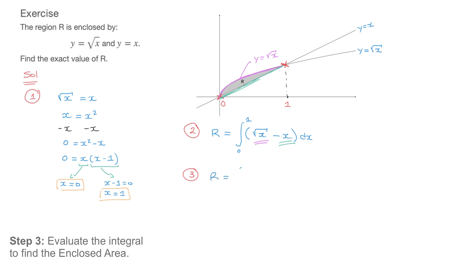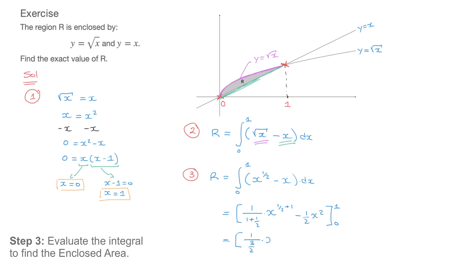R equals the integral from 0 to 1 of x^(1/2) minus x dx. Applying the power rule for integration, this equals 1 over (1 + 1/2) times x^(1/2 + 1), minus 1/2 x². The exponent 1/2 + 1 equals 3/2, so this becomes 1 over (3/2) times x^(3/2) minus 1/2 x², evaluated from 0 to 1. Tidying the fraction using a/(b/c) = ac/b, 1 over (3/2) becomes 2/3. So we have 2/3 x^(3/2) − 1/2 x² from 0 to 1.